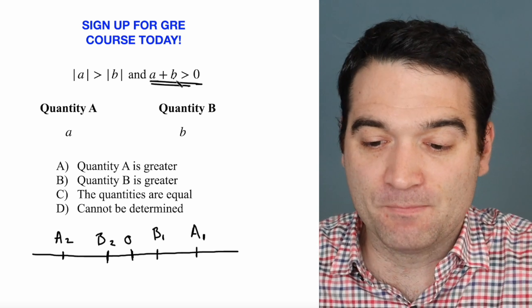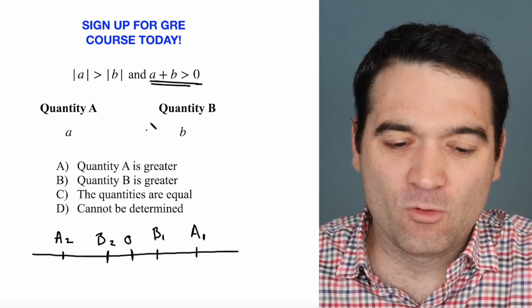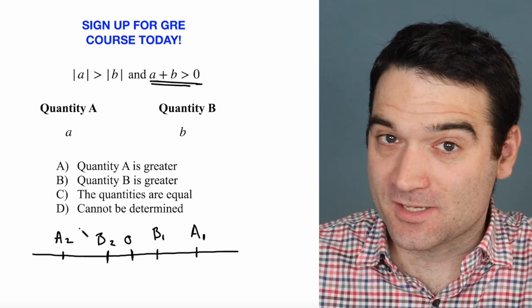So let's consider this second piece of information right here. A plus B is greater than zero. What does that mean? Well, it means that when I add A and B together, it can't be negative. So for instance,